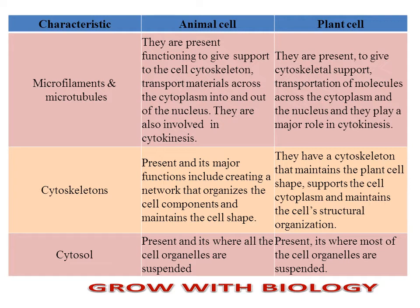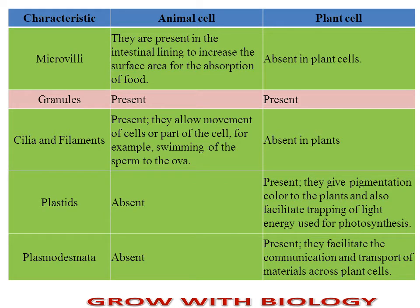Cytosol is present inside the cytoplasm and helps in suspending all the cell organelles in both plant and animal cells. Microvilli are completely absent in plant cells while they are present in animal cells, particularly in the intestinal lining, where they help increase the surface area for absorption of food. Granules are present in both animal and plant cells. Cilia and flagella are absent in plant cells whereas they are present in animal cells, helping in movement — for example, sperms use cilia and flagella to move toward the ovum.